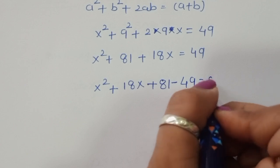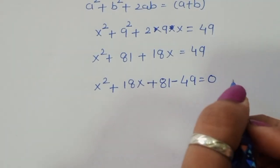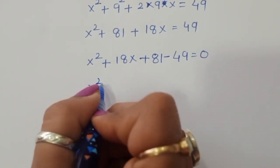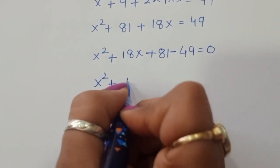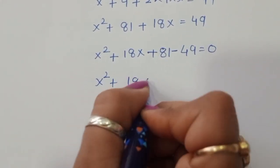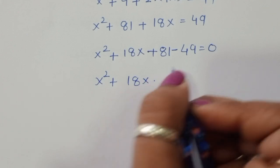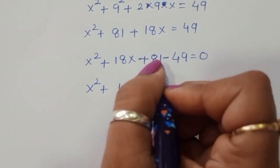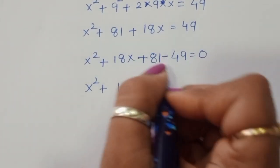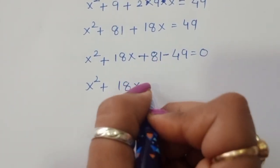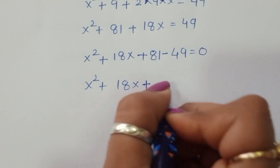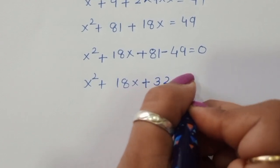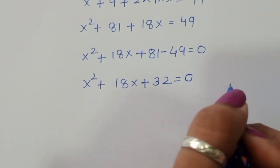Now x square plus 18x plus 81 minus 49 is equal to 0. When we subtract, we get x square plus 18x plus 32 is equal to 0.